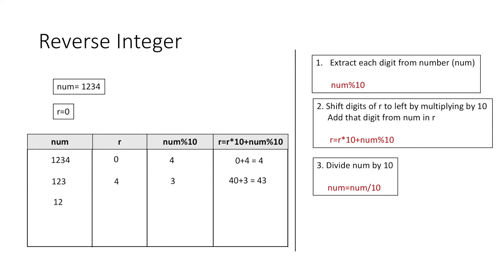Therefore num is now equal to 12 and r is equal to 43. Now num modulus 10 would be 2, and again multiplying r by 10 and adding 2 we get 430 plus 2 which is equal to 432. Now again we divide num by 10 and we get num equal to 1.